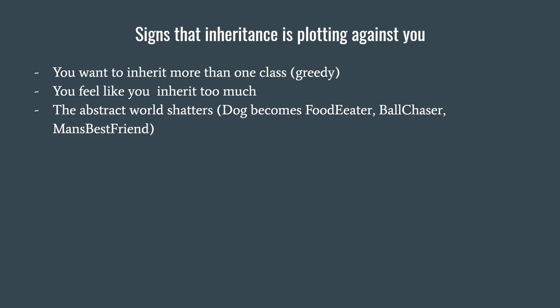For example, let's say I started with a dog parent class. After I had to split it, I ended up with three different classes: food eater, ball chaser and man's best friend. This had almost nothing to do with the reality I was trying to abstract.